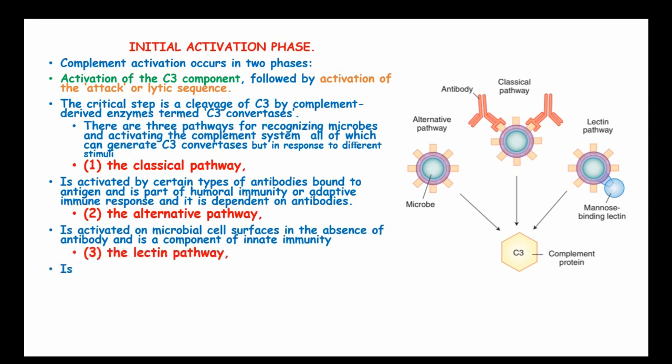Lastly is the lectin pathway. This pathway is activated by plasma lectin which binds to the mannan or mannose of the microbes and activates the classical system pathway in the absence of an antibody.